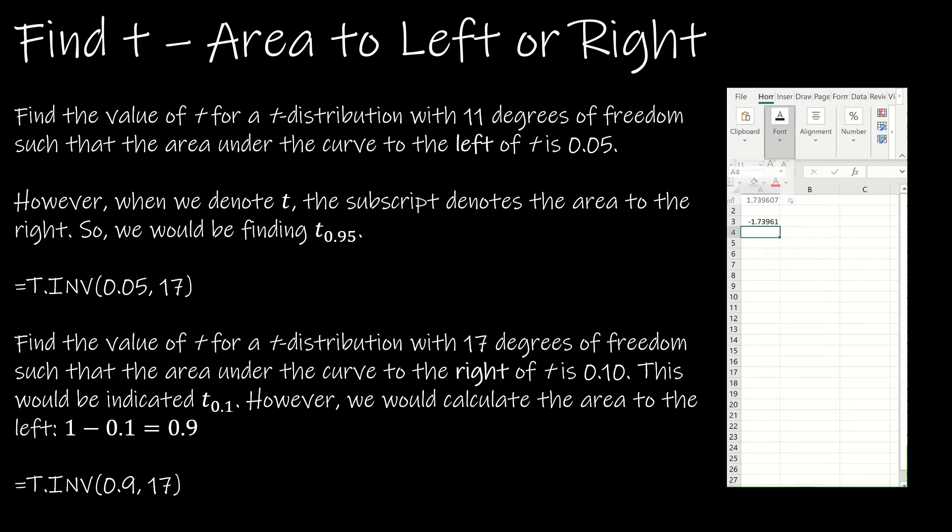Why does this make sense? Because just like a t-score, if I have my t model, essentially what we're saying is the first one that I found was t of 0.05, and that means that this area is 0.05.